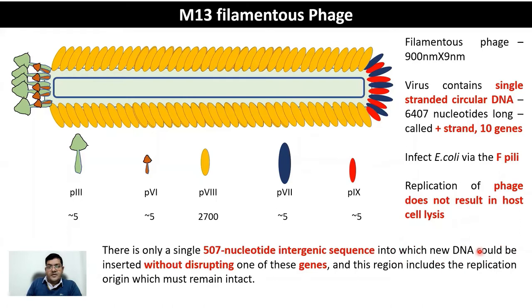All 10 genes are essential for the survival of M13 filamentous phage. There is only a single 507 nucleotide intergenic sequence into which new DNA could be inserted without disrupting one of these genes. This region includes a replication origin, which must remain intact. So there is a lot of stringency in where you can insert your DNA.